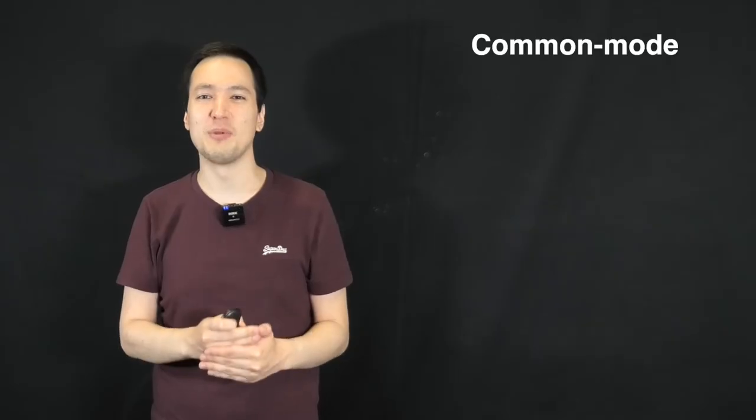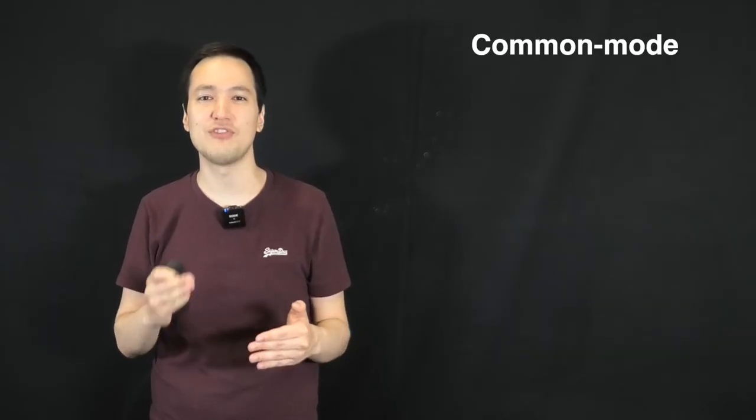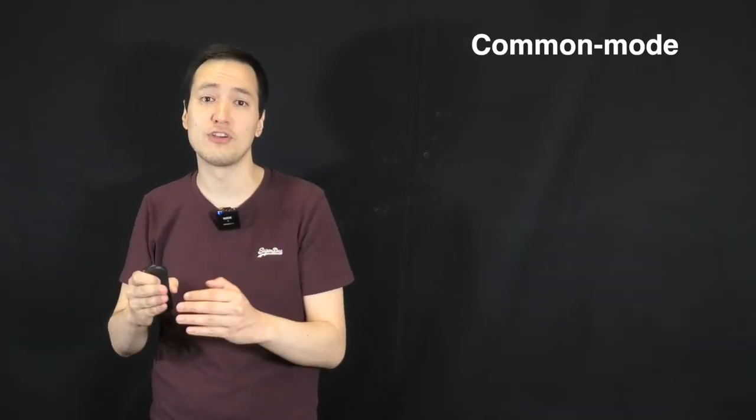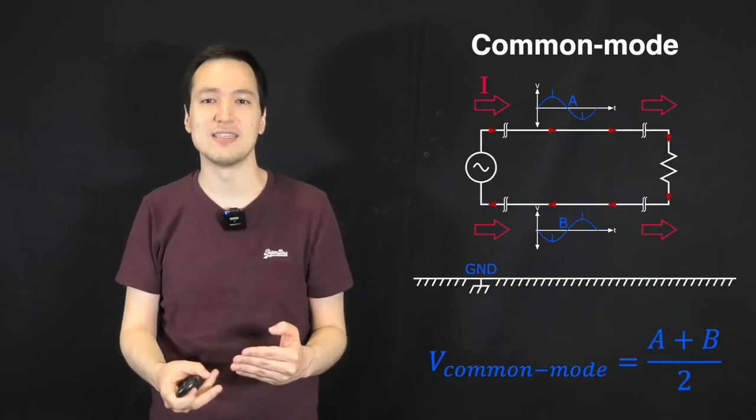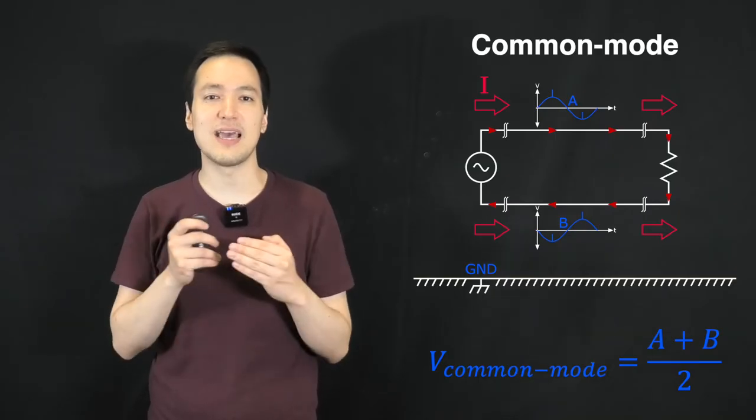Now let's talk about common mode problems, which are somewhat different and often more difficult to control. You have these especially if you have longer connection lines. Then, these act like antennas.